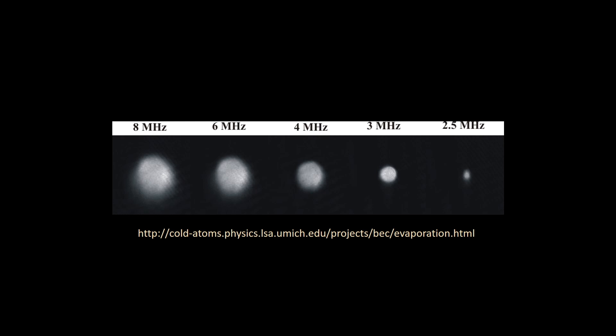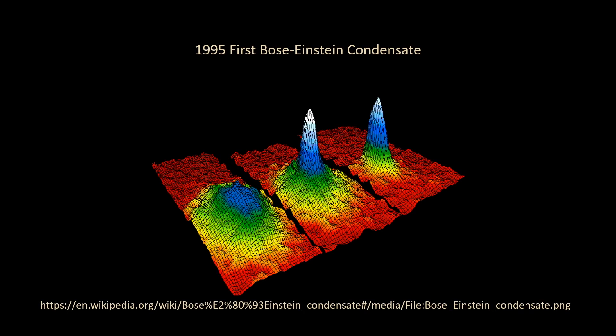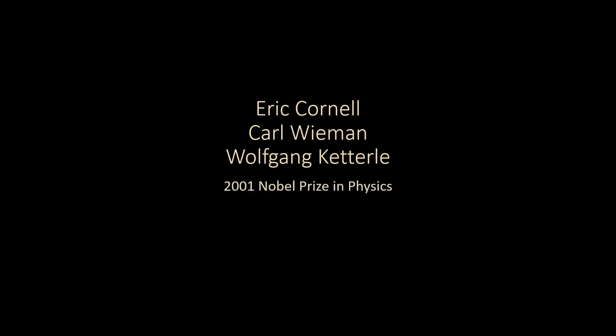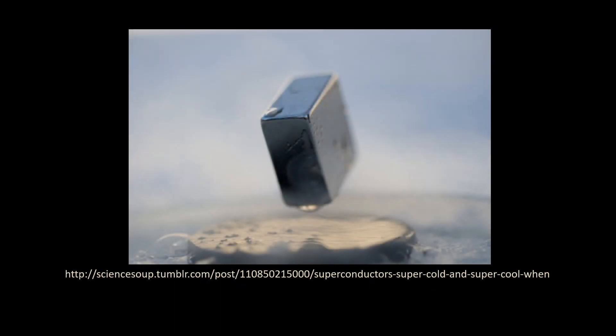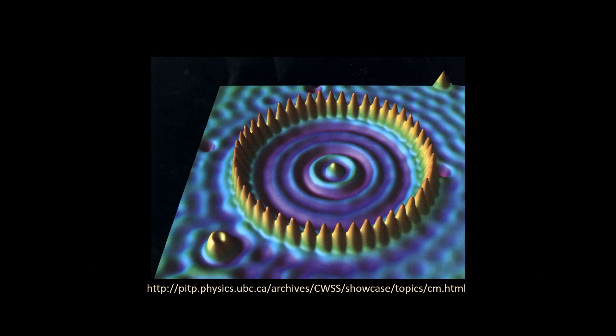Bose-Einstein condensates were first successfully created in 1995 by Eric Cornell and Carl Wieman, and Wolfgang Ketterle using rubidium and sodium atoms respectively, for which they shared the 2001 Nobel Prize in Physics. The successful creation of Bose-Einstein condensates has done two great things for physics: it has provided strong supporting evidence that our understanding of quantum mechanics is correct, and it has a myriad of research applications, such as superconductors, condensed matter physics, and mesoscopic quantum physics measurements, just to name a few. There is a bright, albeit cold, future for physics ahead.